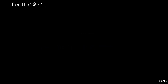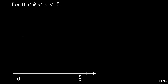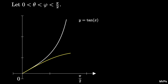Start with two real numbers, theta less than phi, both less than pi over 2. On the domain from 0 to pi over 2, graph the functions y equals the tangent of x, which is concave up and increasing, and the function y equals sine of x, which is concave down and increasing on the domain.